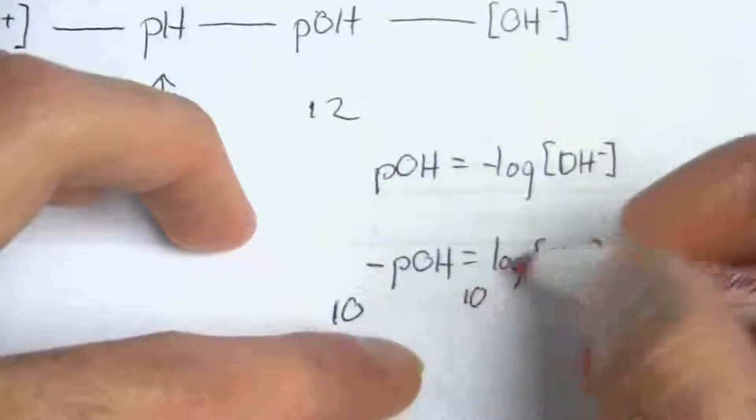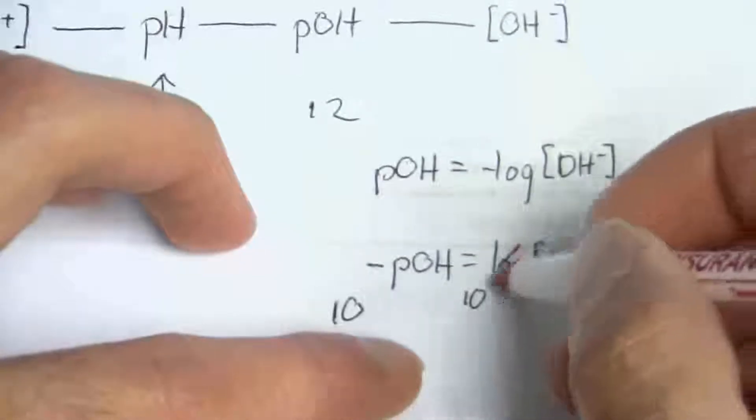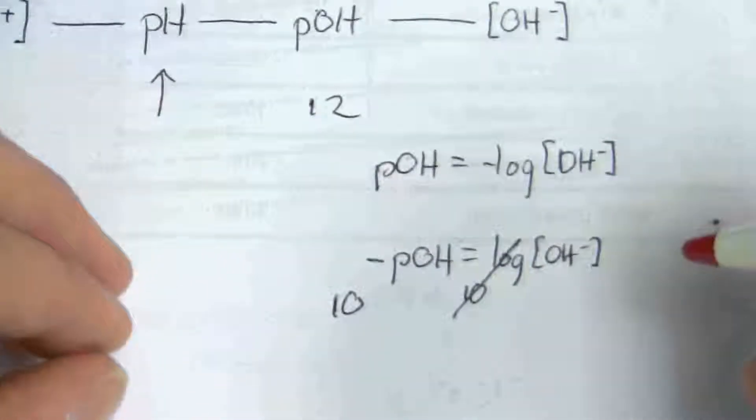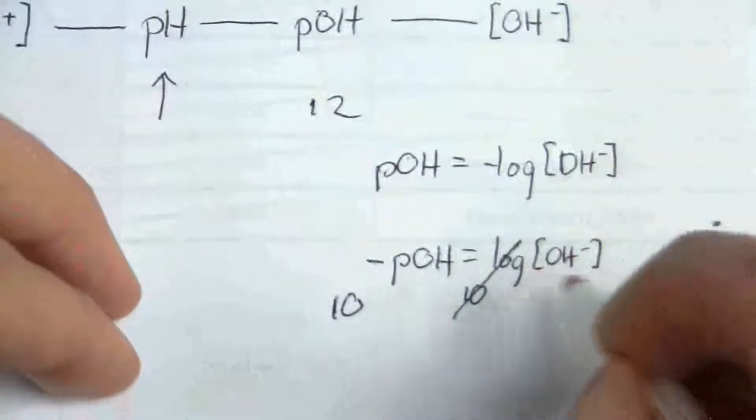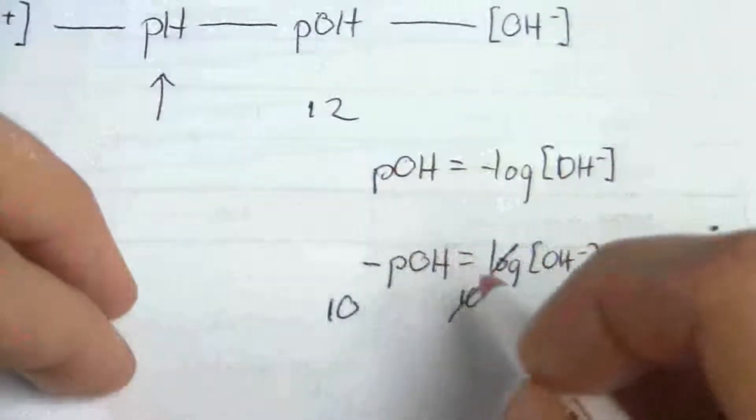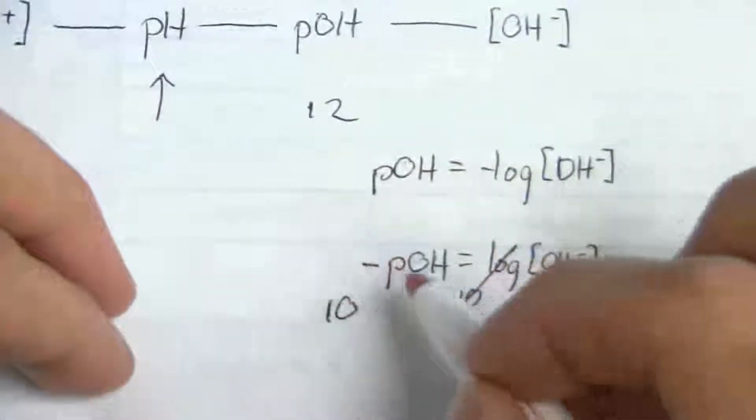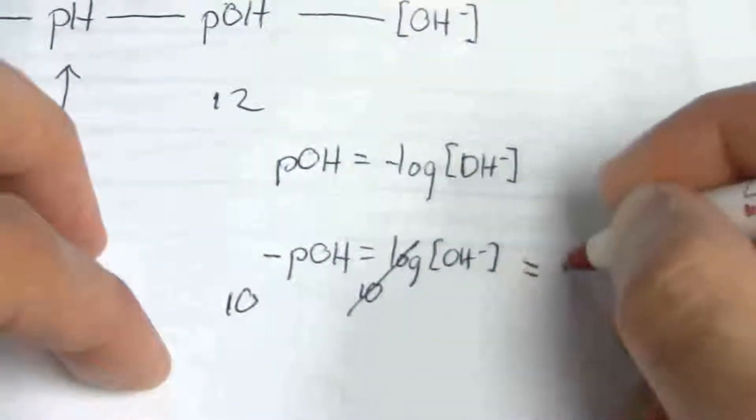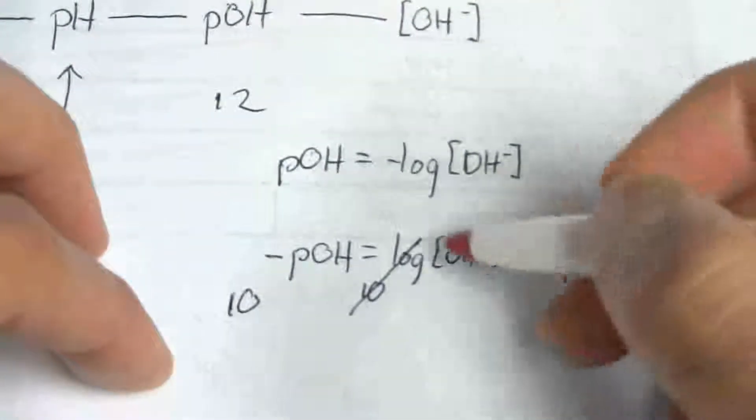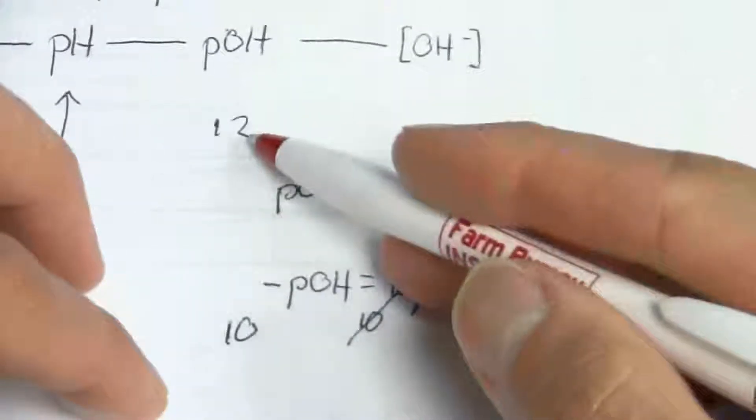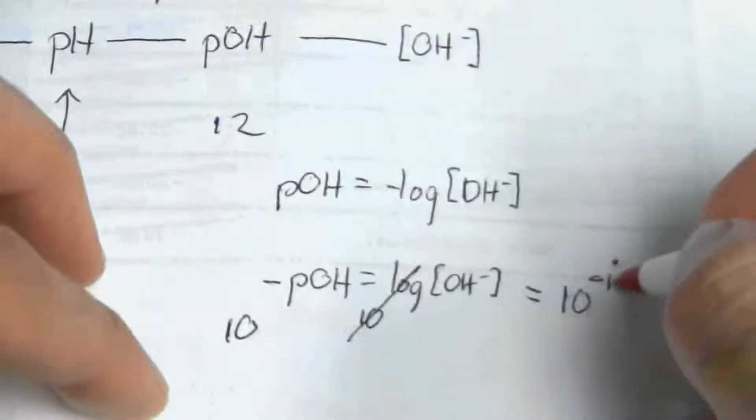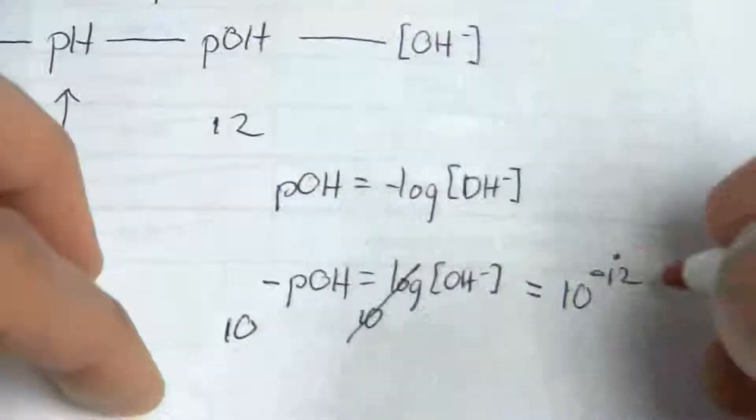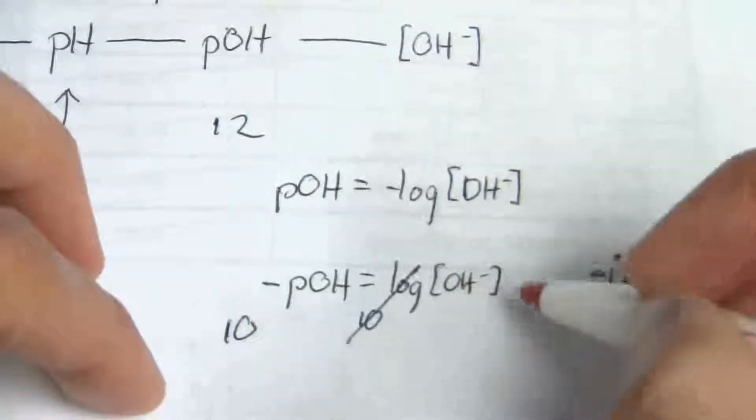Well, 10 and log are opposites. They're inverse, and so they end up canceling each other out. And I have hydroxide ion concentration equals 10 to the negative pOH. So what that is going to be for this case is 10 to the negative 12. That's my hydroxide ion concentration.